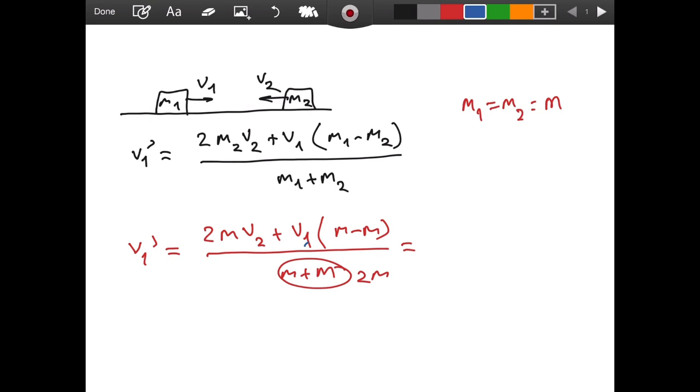So at the end we have 2m v2 divided by 2m. The 2m's cancel, and look at this, we get v2. This is interesting, isn't it?